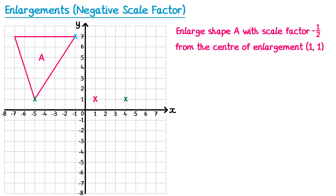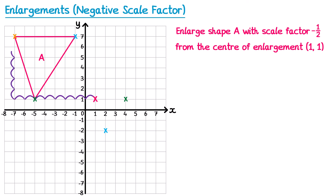For the second point, the journey from center is 2 left and 6 up. We do half of that in reverse: 1 right and 3 down. For the orange cross, the journey is 8 left and 6 up. Half of that reversed: 4 right and 3 down. Joining those points together forms the triangle, which has been flipped upside down because of the negative scale factor, and is half the size because the scale factor was negative one half.